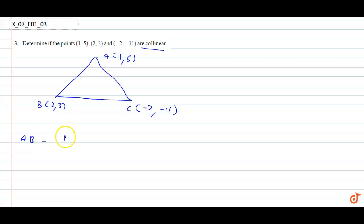between AB: √((2-1)² + (3-5)²) = √5. BC: √((2+2)² + (3+11)²) = √(4² + 14²)